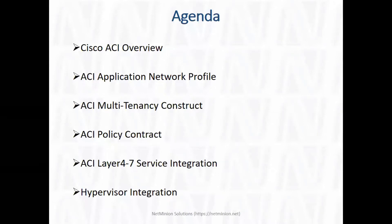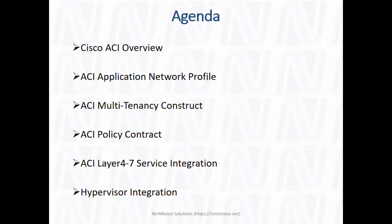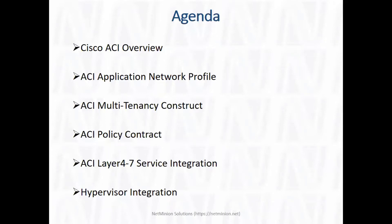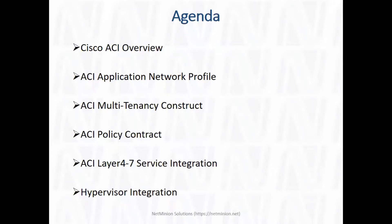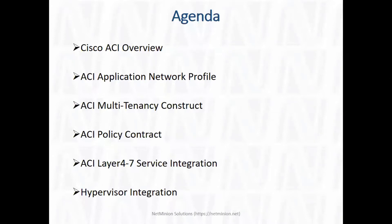We will discuss endpoint communications in detail — control plane and data plane. Various protocols include ISIS, COOP, MP-BGP, and at the data plane it is VXLAN. We'll discuss in detail various scenarios like how the fabric discovers a silent host, what the fabric behavior is in terms of flooding — unicast flooding, unknown unicast flooding — and what happens when these are disabled.